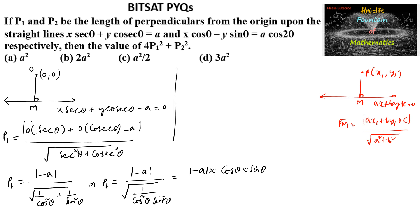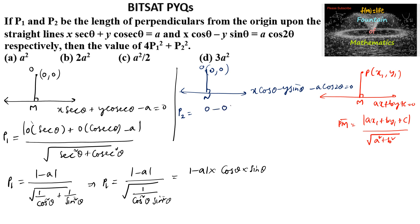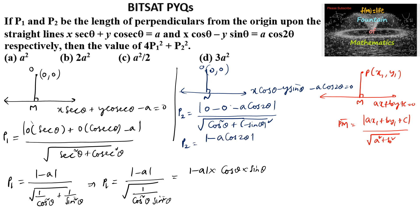Similarly, for the second line x·cosθ - y·sinθ - a·cos2θ = 0, the distance from the origin gives p2 = |0·cosθ - 0·sinθ - a·cos2θ| / √(cos²θ + sin²θ). Since cos²θ + sin²θ = 1, we get p2 = |−a·cos2θ|.